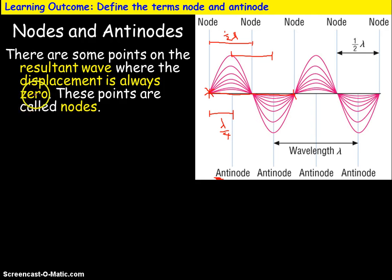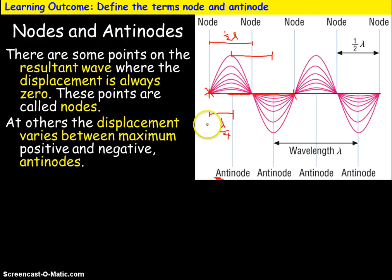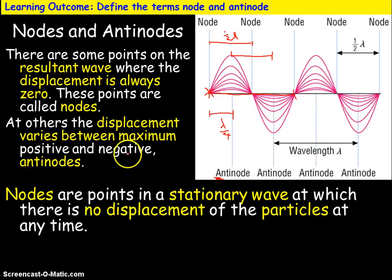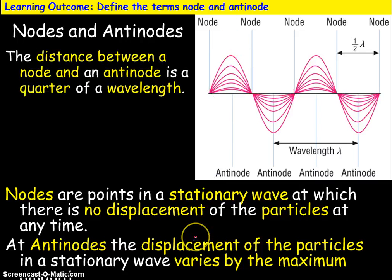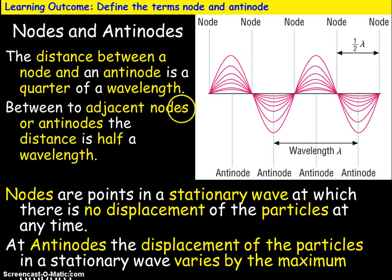The resultant wave has points of zero displacement called nodes. Where the displacement varies between a maximum positive and negative value, we call that an anti-node. At a node, particles in a stationary wave have no displacement at any time. At an anti-node, the displacement of the particles varies at its maximum. To summarise: between a node and anti-node is λ/4, and between two adjacent nodes or two adjacent anti-nodes is λ/2.